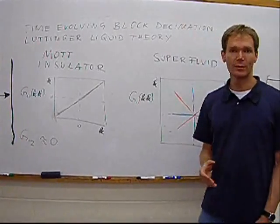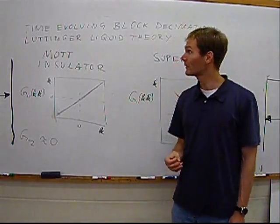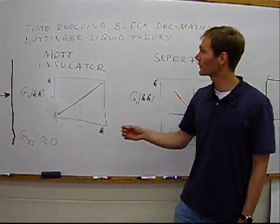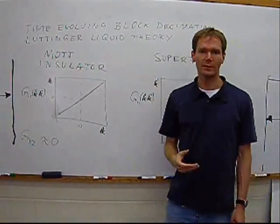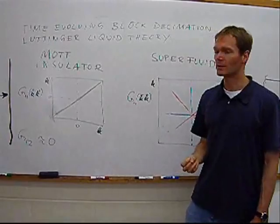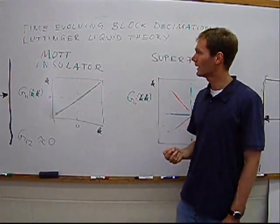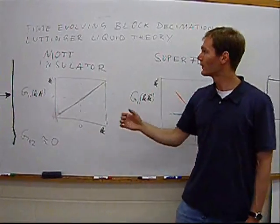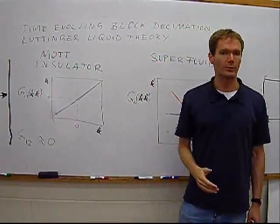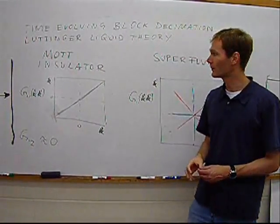In this paper, we used two different methods to study our system. One of them is a numerical approach called time-evolving block decimation method, which is a quasi-exact approach suitable for one-dimensional systems, as well as a field-theoretic approach called Luttinger liquid theory, with which one can calculate the universal features of the system.